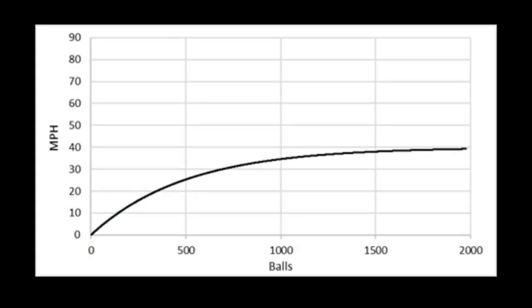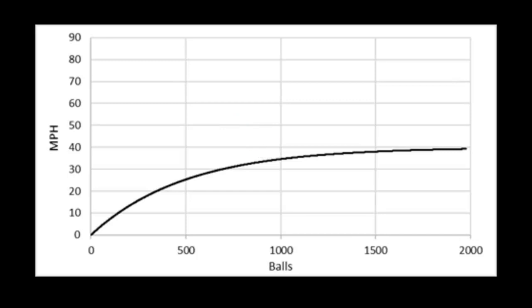This graph shows the boat speed relative to the number of balls thrown. You can see that 500 balls gets up to about 25 miles per hour, and it takes about 1,000 balls to get to 35 miles per hour. I can keep throwing lots more balls and gradually approach 40 miles per hour, but never quite get there. This particular boat has no frictional resistance with the water, so even with this special boat, there's still a top speed that cannot be exceeded — and that's the speed of the balls relative to the boat.